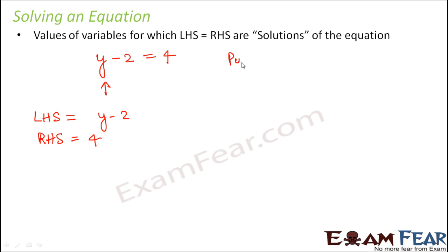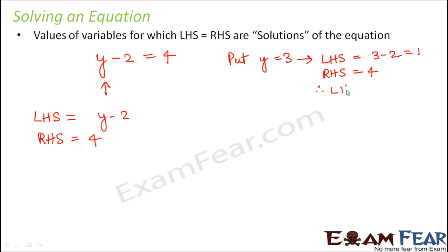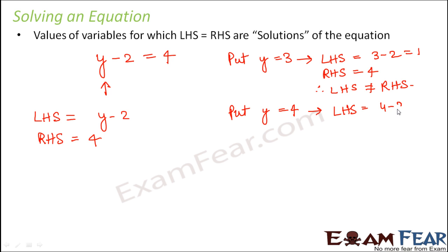Let us try with different values. If we put y equal to 3, the left hand side becomes 3 minus 2, which is 1, and the right hand side is 4, so left hand side is not equal to right hand side. Let's try y equal to 4: the left hand side becomes 4 minus 2, which is 2, and the right hand side is 4, so again left hand side is not equal to right hand side.